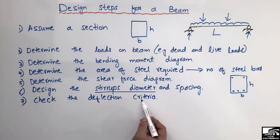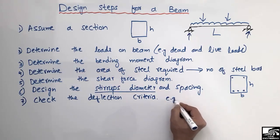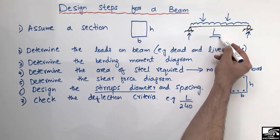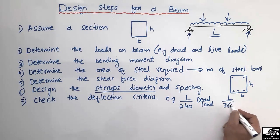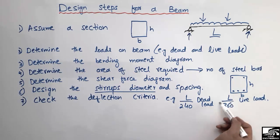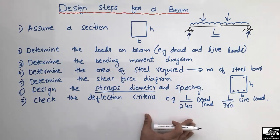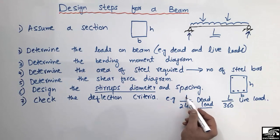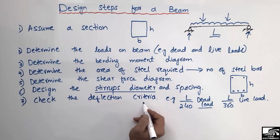The seventh step is to check the deflection criteria. The beam deflection should be smaller than the values recommended by different codes. For dead load, the deflection should be smaller than L/240, where L is the length of the beam. For live load, it should be less than L/360. Our deflection must satisfy these criteria; otherwise, we have to revise the whole design of the beam.